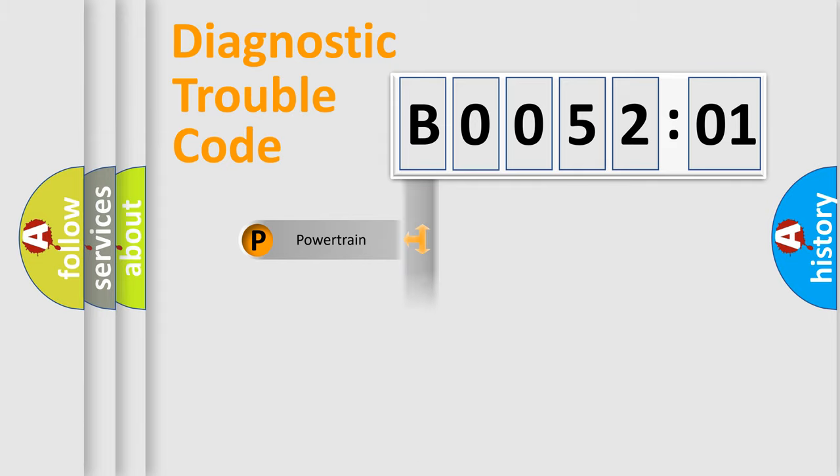Powertrain, Body, Chassis, and Network. This distribution is defined in the first character code.